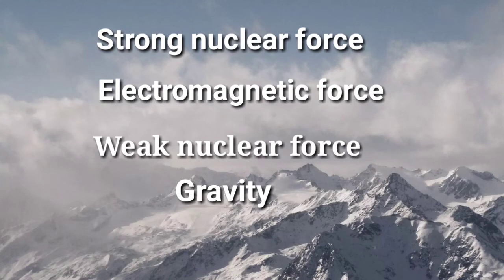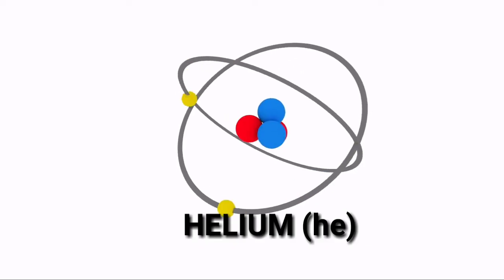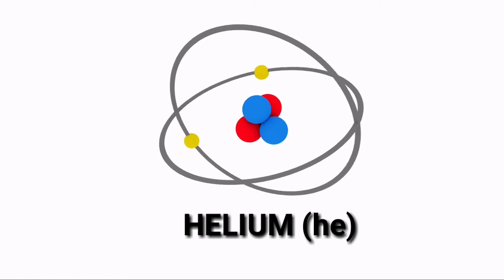By this time, different forces of the universe — strong nuclear force, electromagnetic force, weak nuclear force, and gravity — had formed. The universe cooled down enough for quarks to combine with each other, forming hadrons like neutrons and protons.